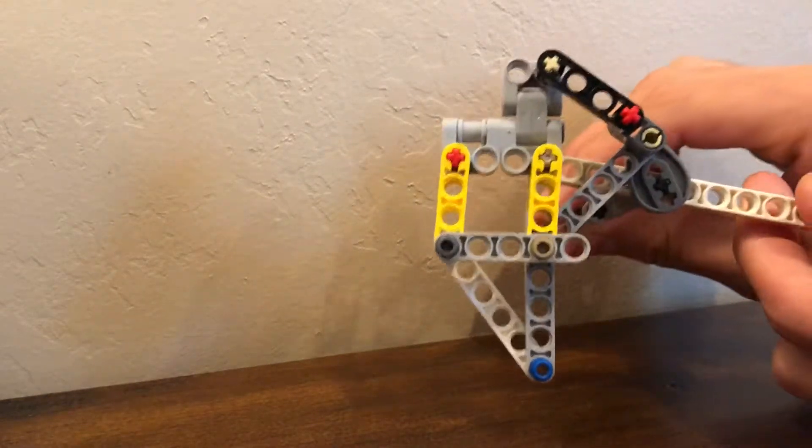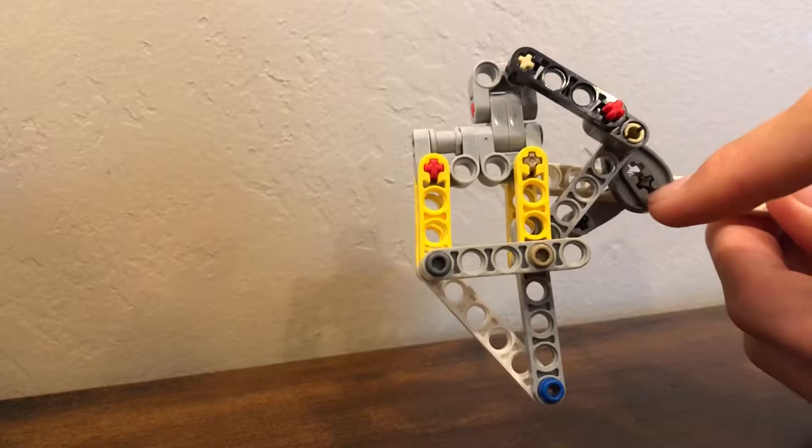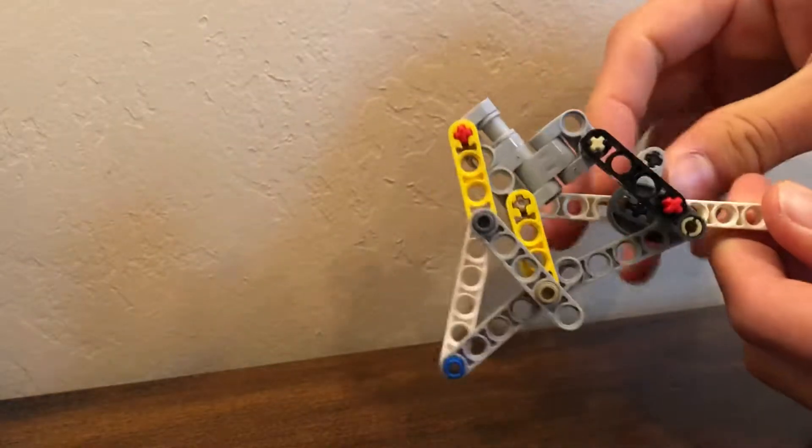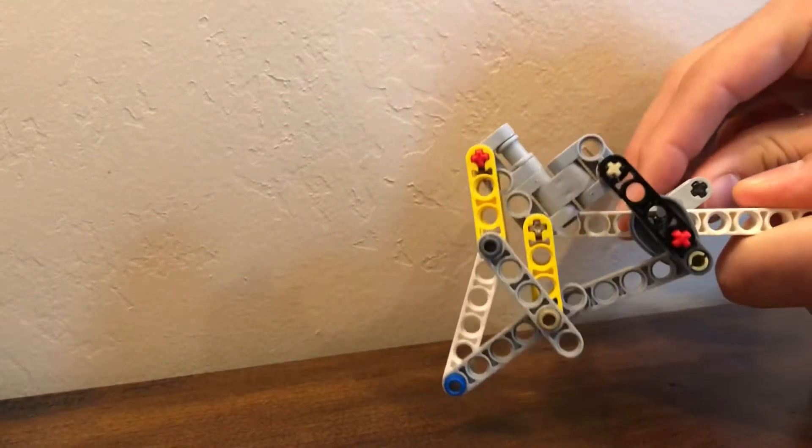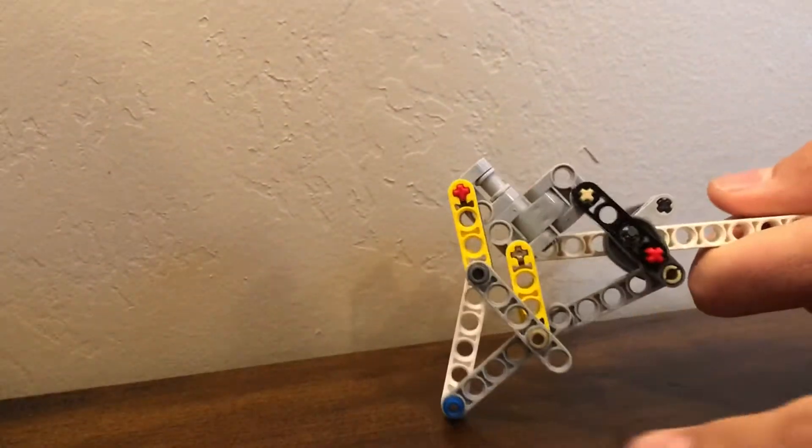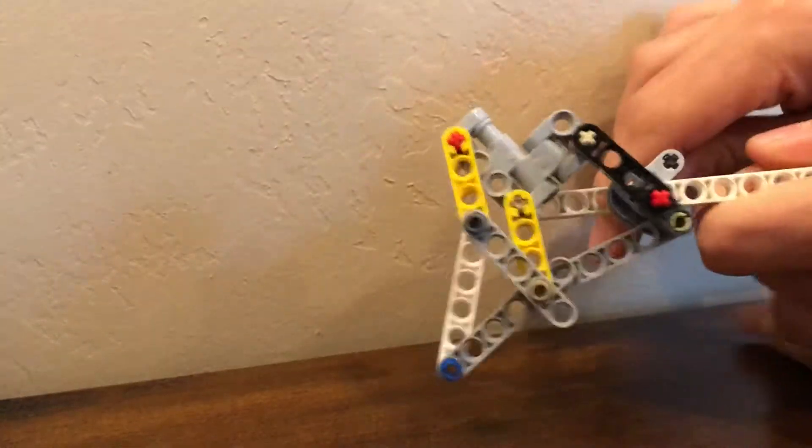It uses a linkage system, so there's a fixed pivot here, and there's a cam right here that makes the leg have a walking motion that's sort of flat on the ground, and then it lifts up and advances forward.